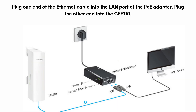First of all, plug one end of the Ethernet cable into the LAN port of the PoE adapter. Plug the other end into the CPE-210. Connect another Ethernet cable from the LAN port of the PoE adapter to your computer. Plug the PoE adapter into a power outlet to power on the CPE-210.